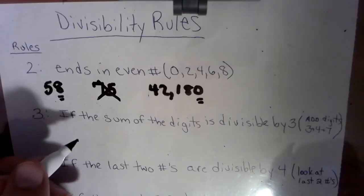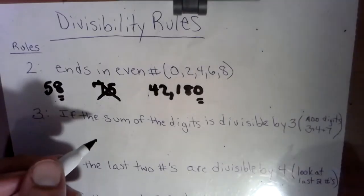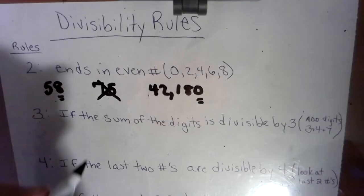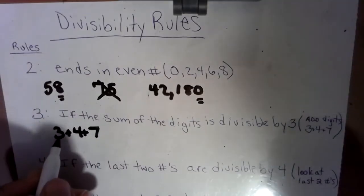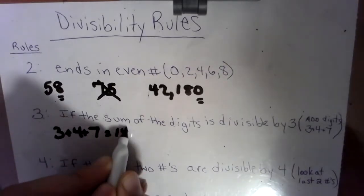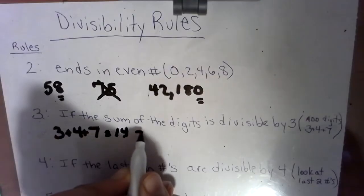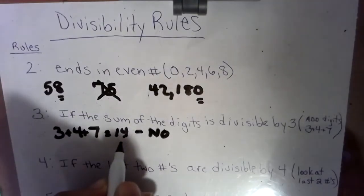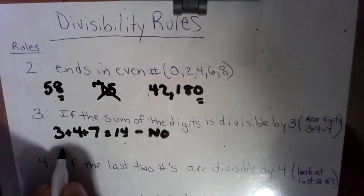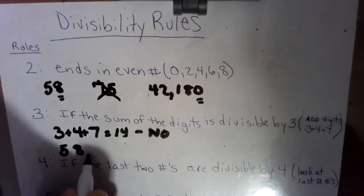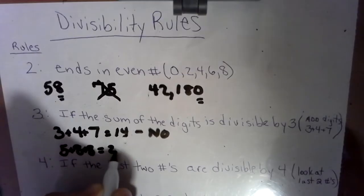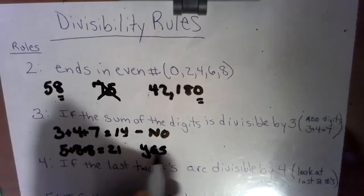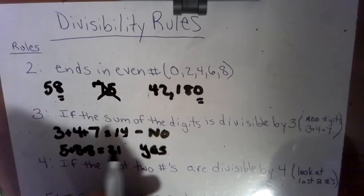Number three's rule: if the sum of the digits is divisible by three. For instance, in the parentheses I put 347. If we put little plus signs in between, three plus four is seven, seven plus seven is 14. Can three go into 14? No, because the sum of the digits was 14 and it does not work. So let's look at 588. There's five plus eight plus eight, that's 21. Can three go into 21 nicely? Yes.